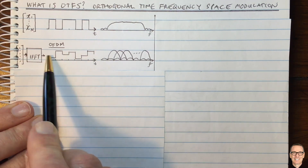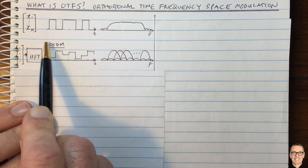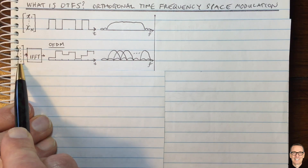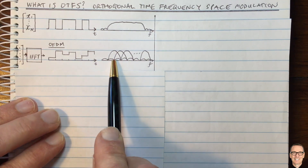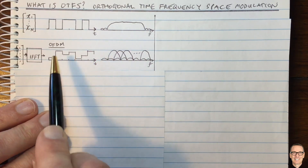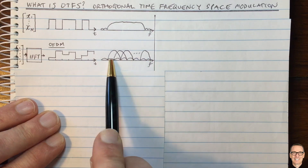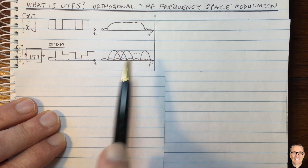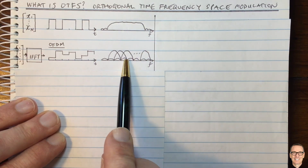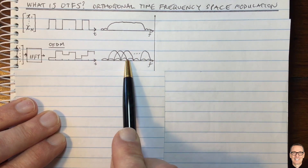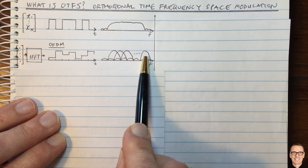So essentially we're putting our data into its own subchannel, and the subchannels are orthogonal. Here we had time being orthogonal; now we have the frequency subcarriers being orthogonal. This is an advantage because if there's part of the spectrum with a null, the other subchannels go through fine, and you can equalize each subchannel independently.